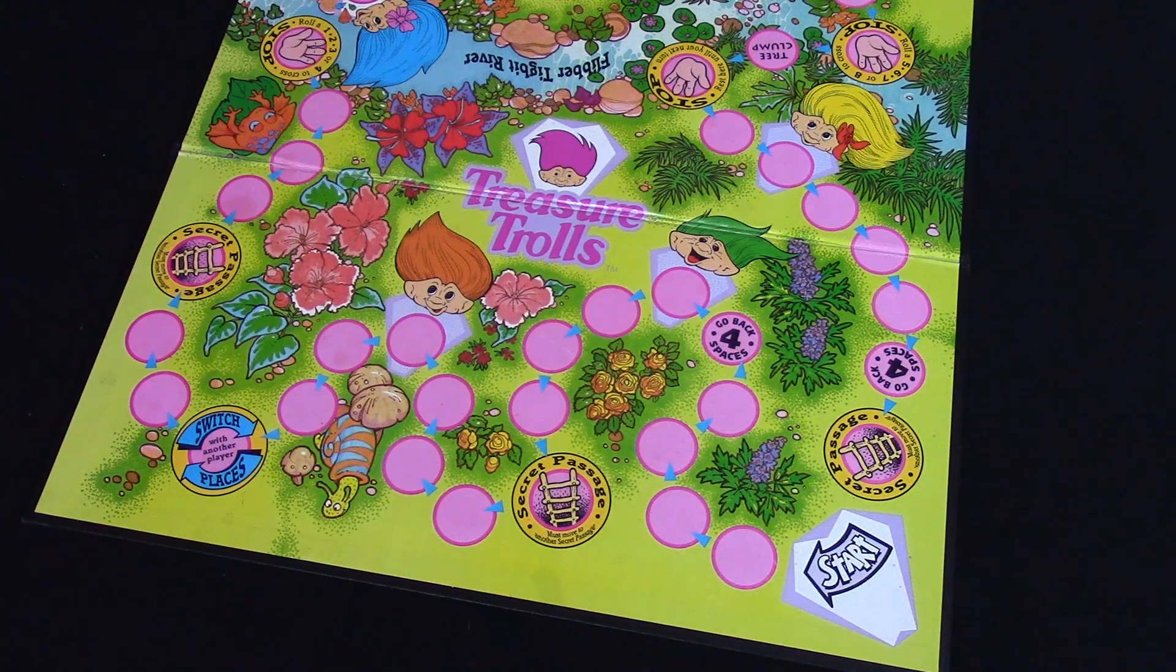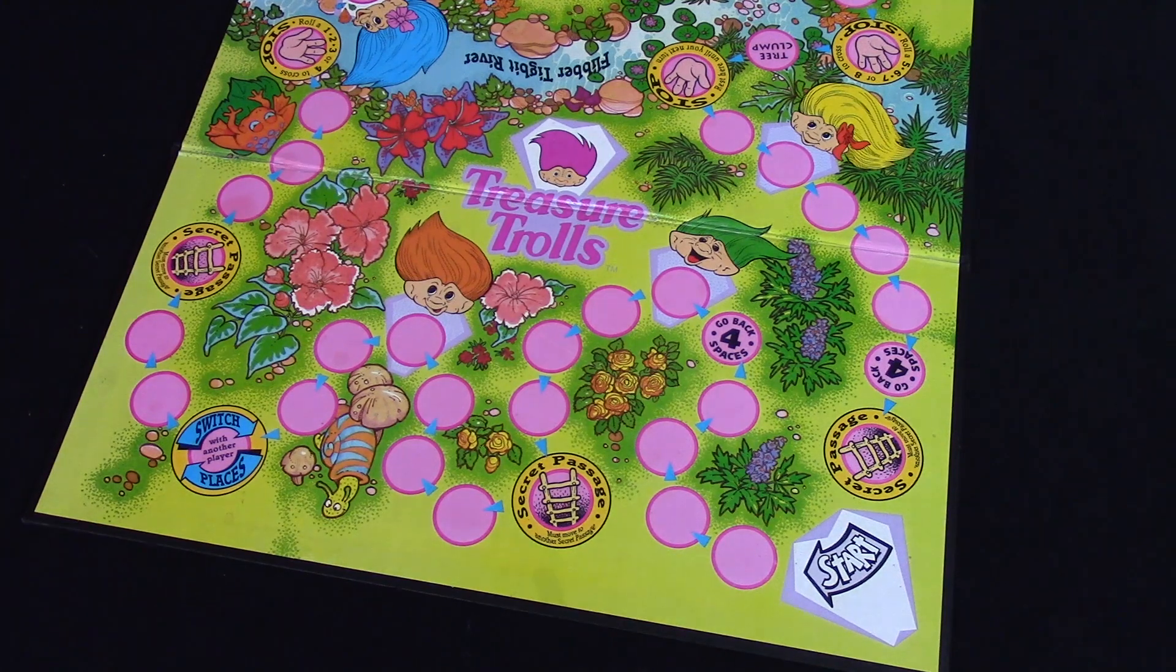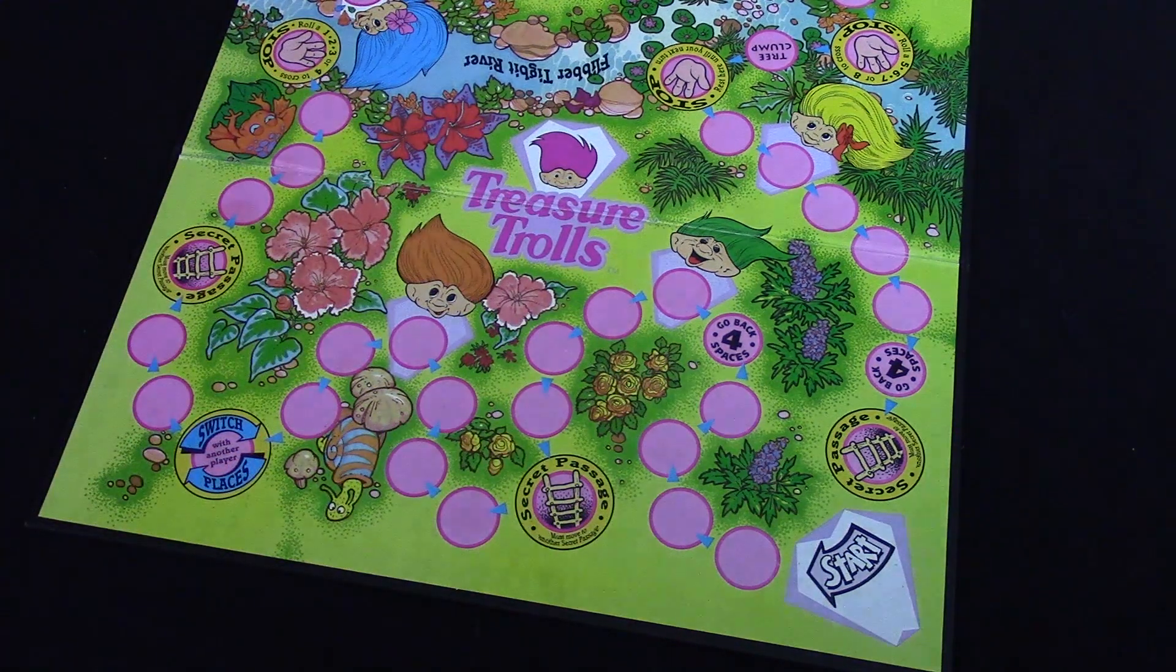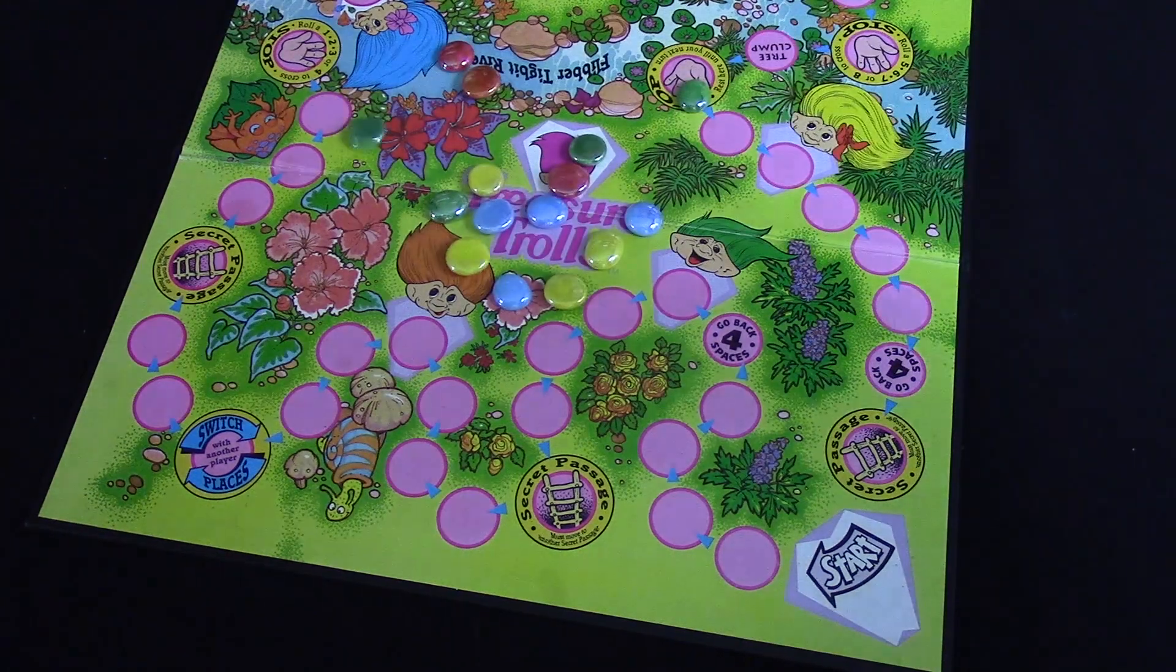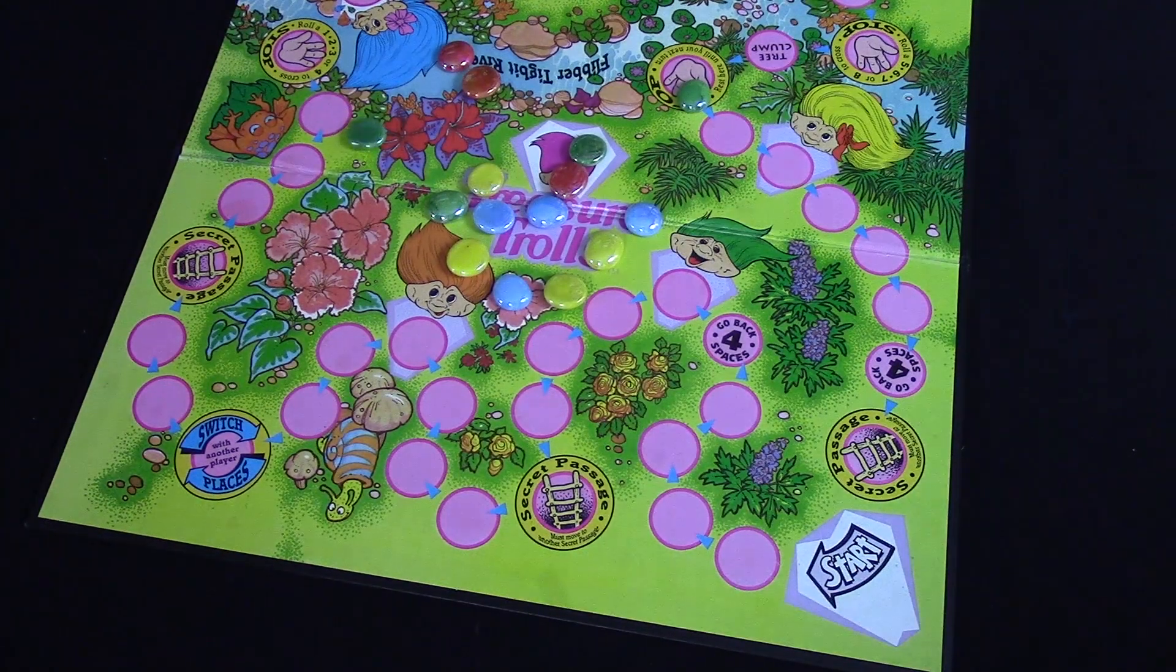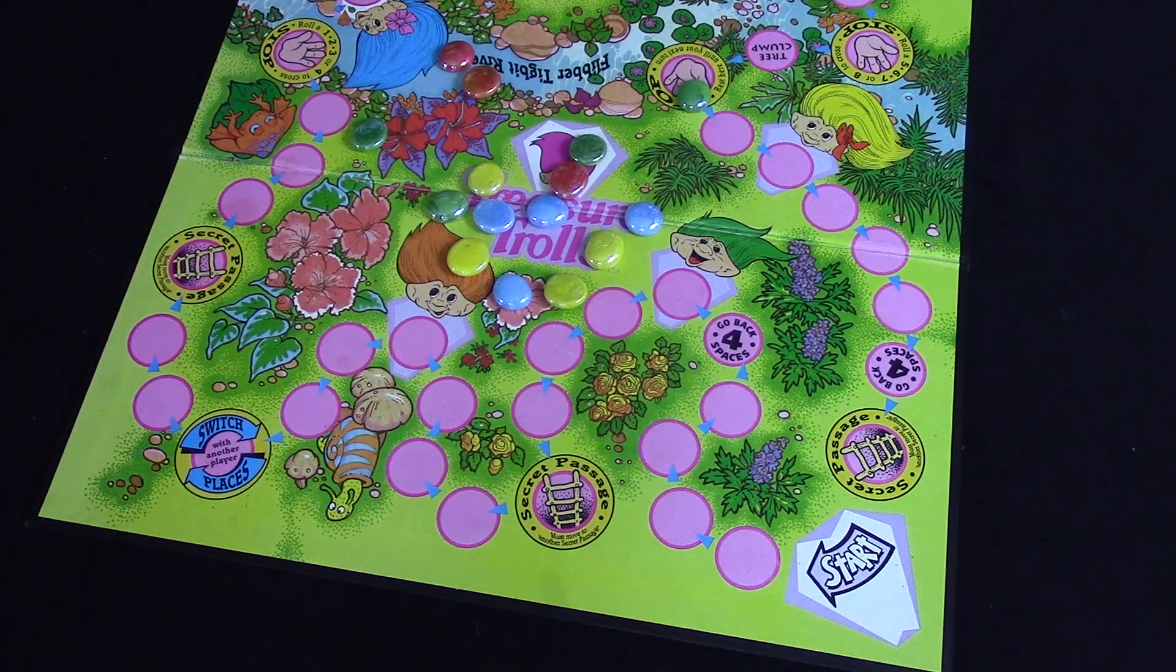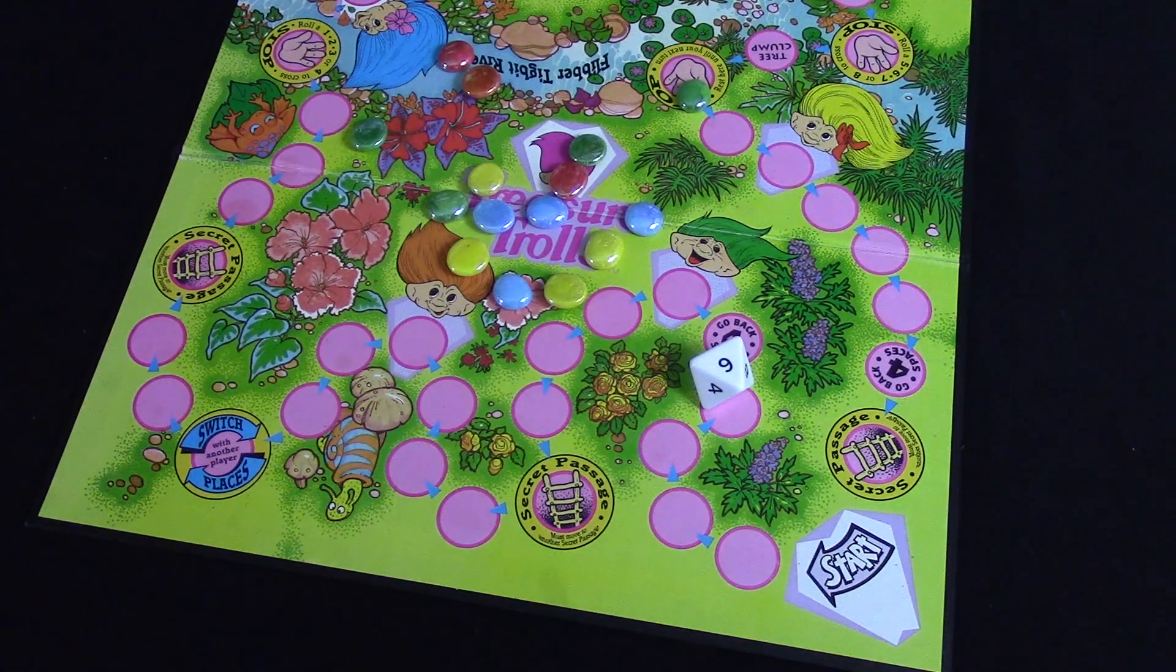One game board, 16 collectible wish stones. My copy did not include these, so I'm going to be using glass beads in their place. One wish stone jewel die. My copy did not include this, so I'll be substituting a numbered die in its place.